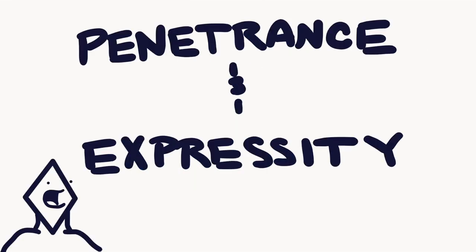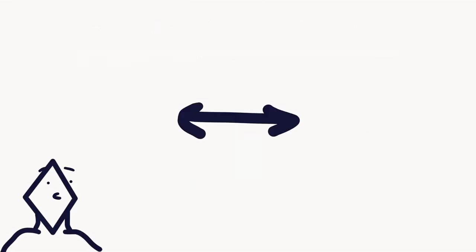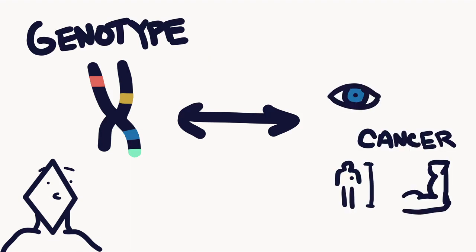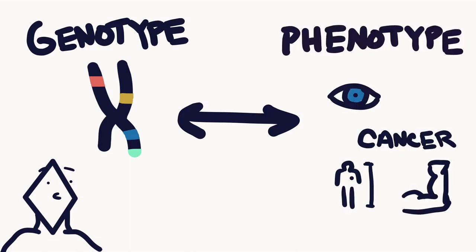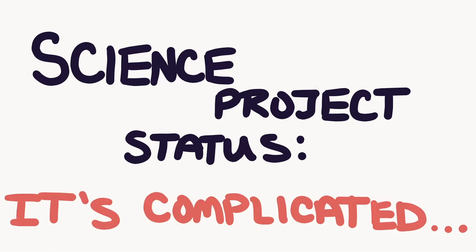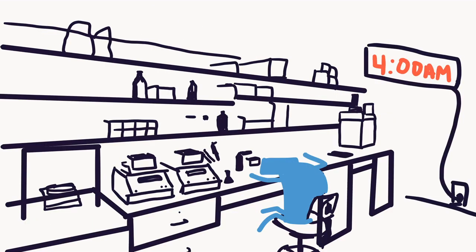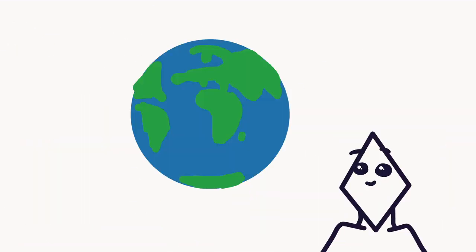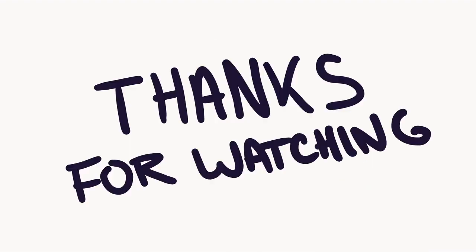These two terms — penetrance and expressivity — are important for describing the relationship between someone's genetic makeup or genotype and the physical result of that genetic makeup or phenotype. This whole process is very complicated and is affected by your environment, your lifestyle, and other gene variants you have. Everything is connected. Thank you for watching.